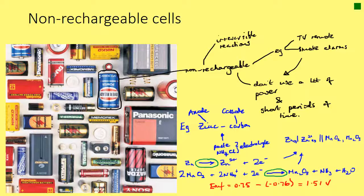The batteries we use to power everything from watches to digital cameras and phones are all types of electrochemical cell. As mentioned in the intro, some types of cell are rechargeable — like your phone battery — while others can only be used until they run out; these are the non-rechargeable cells. Most standard batteries you might find around the home would be non-rechargeable.